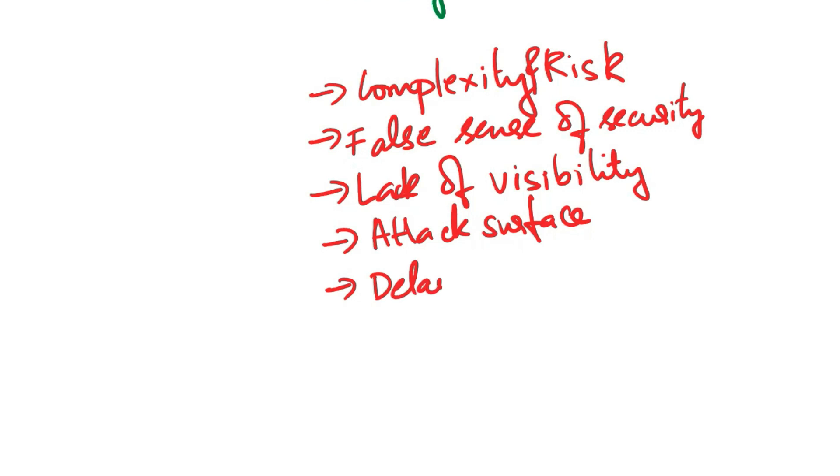Next is delayed or incomplete remediation. Even when vulnerabilities are known, there may be delays in remediation. Developers might postpone updates due to concerns about compatibility or they may not prioritize security updates properly.